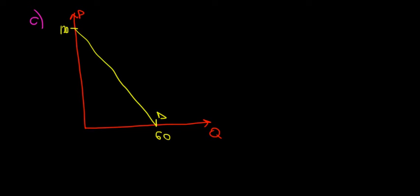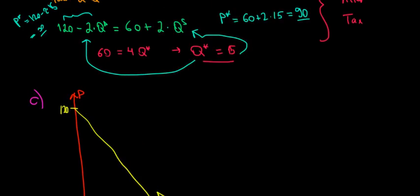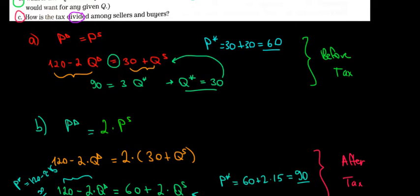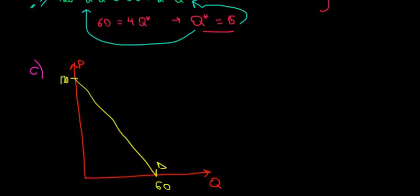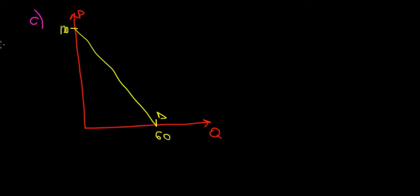Now let's have a look at the supply side before the tax. The supply side before the tax was 30 plus q. So 30 is the price intercept and positive 1 is the slope, meaning the slope will be upward — which is logical for the supply side. It's going to be slightly flatter than the demand line.